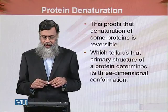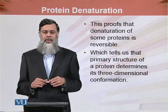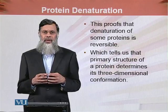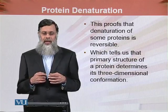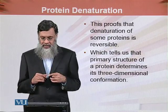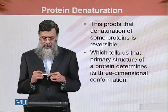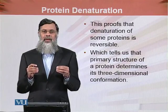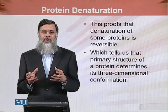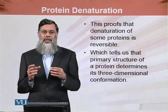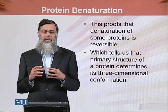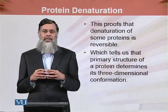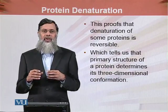This proves that denaturation of some proteins is reversible. It is a reversible process which tells us that the primary structure of a protein determines its three-dimensional conformation. Peptide bonds and covalent bonds are not broken during denaturation, so the primary structure retains itself. Retention of the primary structure allows the protein to refold into its native conformational form, which is required for the proper function of that particular protein.